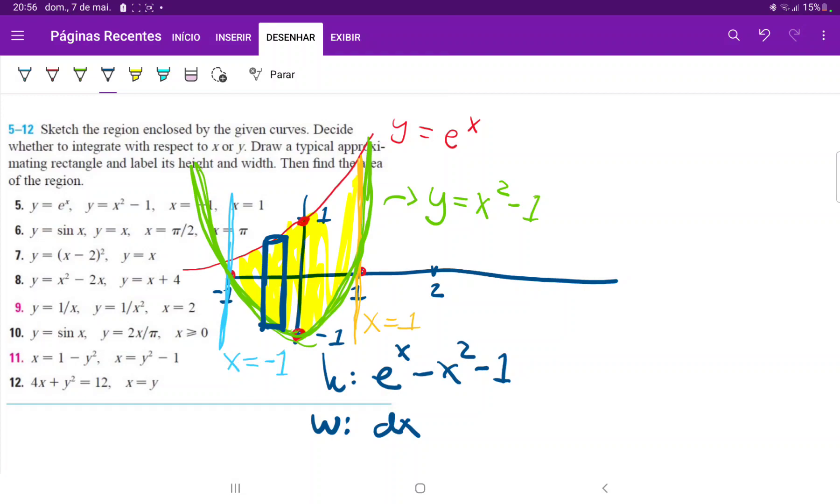Now we can set up our integral. They gave us the boundaries: x from negative one to one. This is the integral from -1 to 1 of e to the x minus (x squared minus one) dx. Let me clean this up.